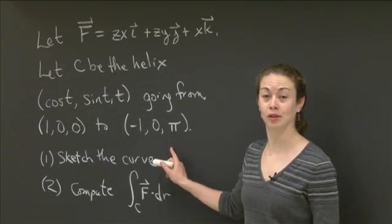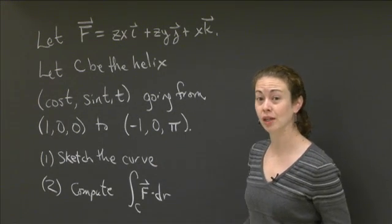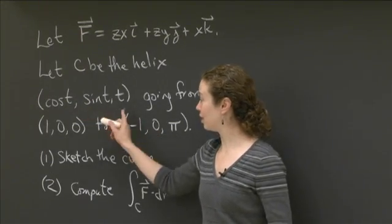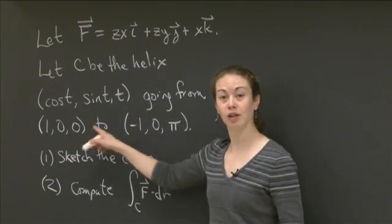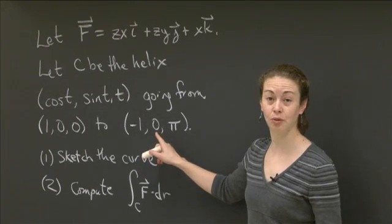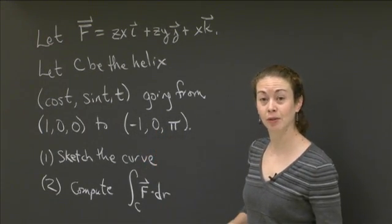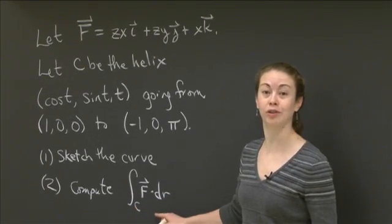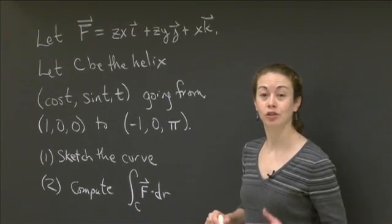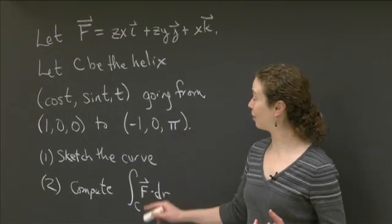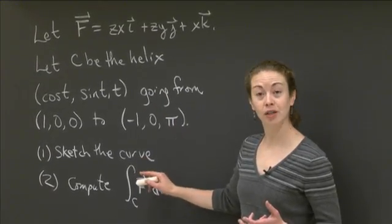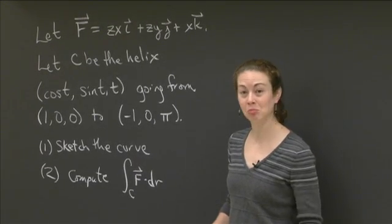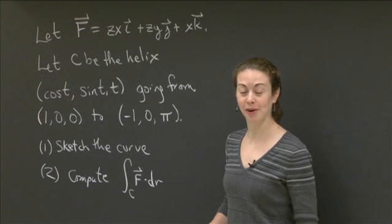I'd like you to do two things with this problem. First, I'd like you to sketch the curve that is carved out when you follow the t values from (1,0,0) to (-1,0,π). Second, I would like you to compute the line integral f dot dr over that portion of the helix. Why don't you pause the video, work on these two parts, and when you're feeling comfortable seeing the solution, bring the video back up.